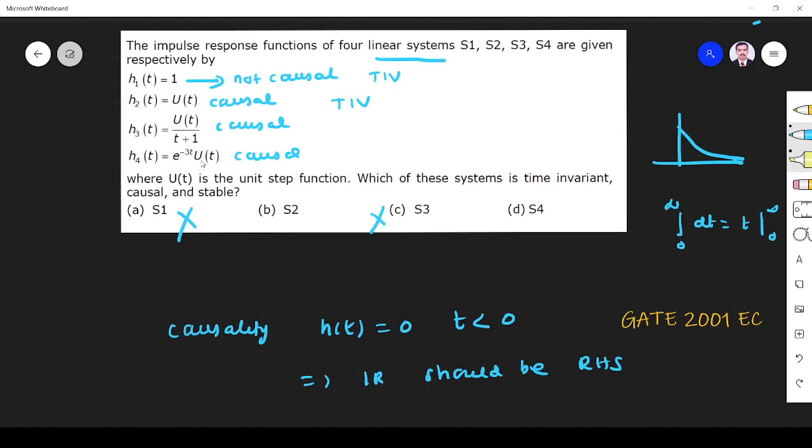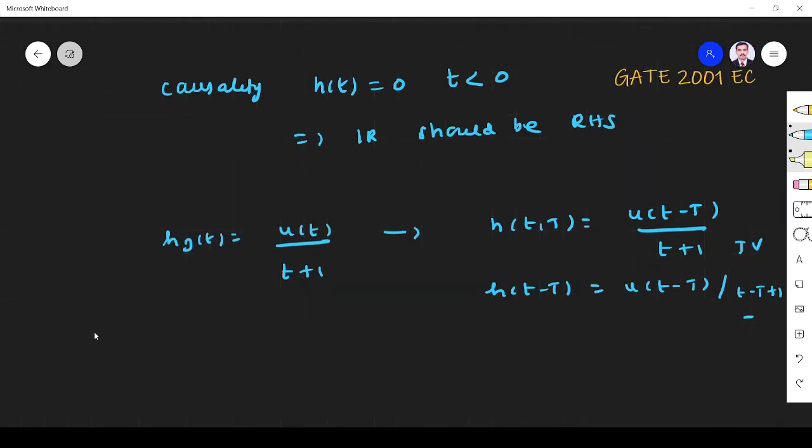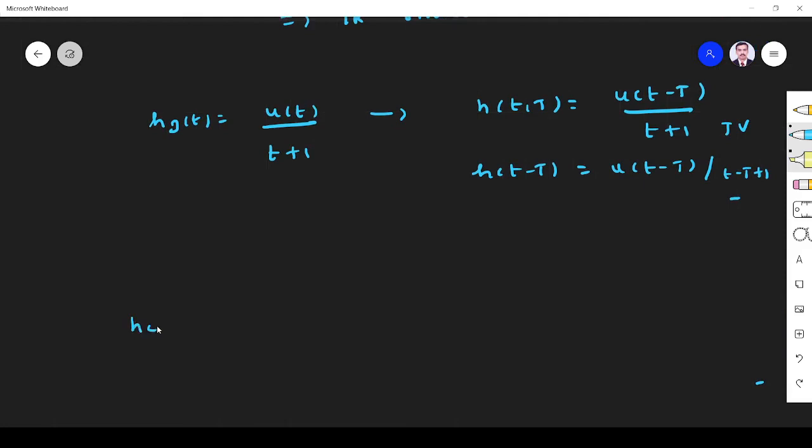And this is also time variant, we know that. Because, again, if you shift H4(t), H4(t) = e^(-3t)U(t).